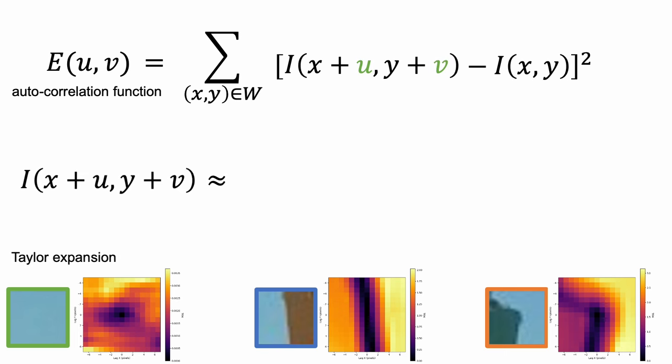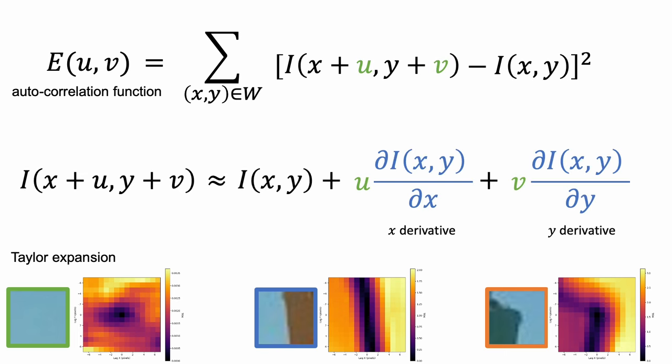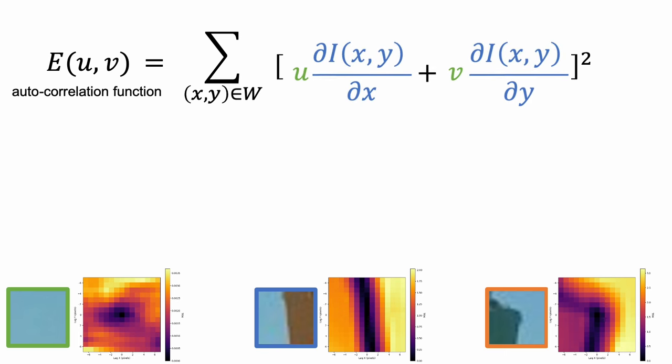Applying Taylor expansion to the 2D image signal leads to this expression. Plugging this term back to the autocorrelation function, we get this simplified equation.